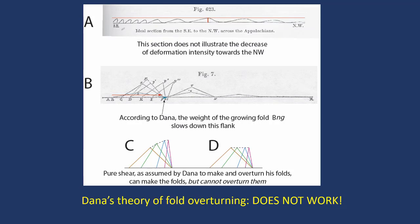Dana thought he saw reclined folds, and he said the way they form is that this fold would steepen, and its weight will make it overturn. It won't — you need a shear. But Dana was really keen to publish quickly, to get ahead of the others, and he got things wrong.